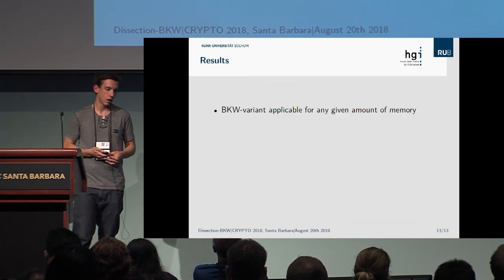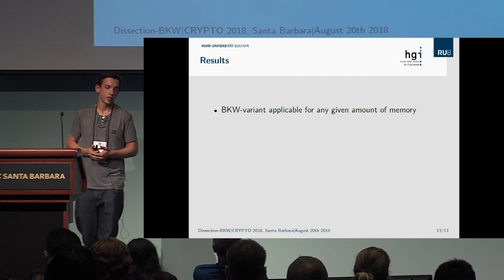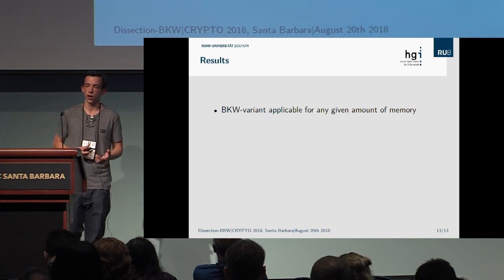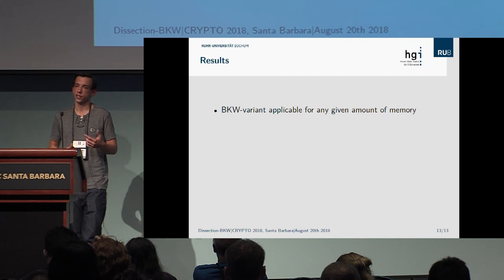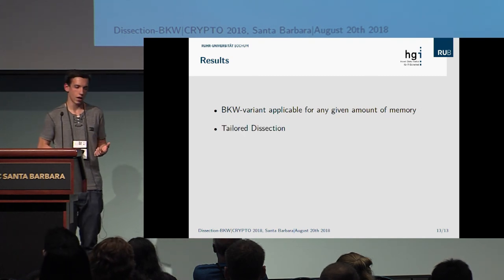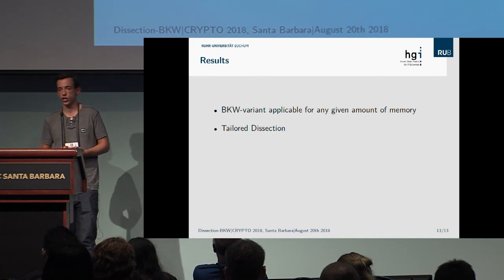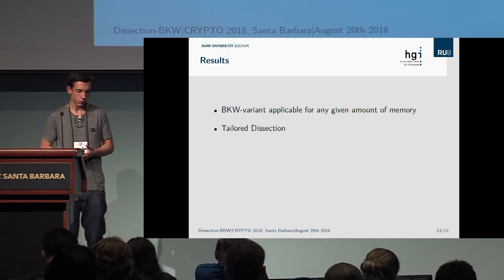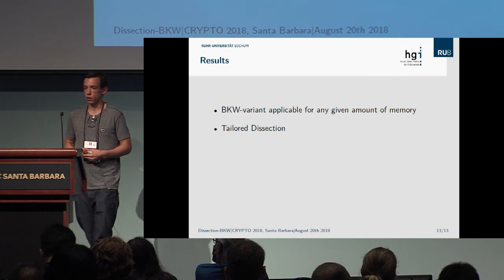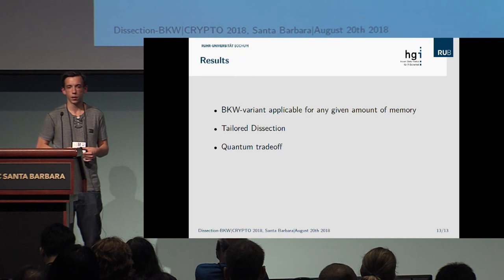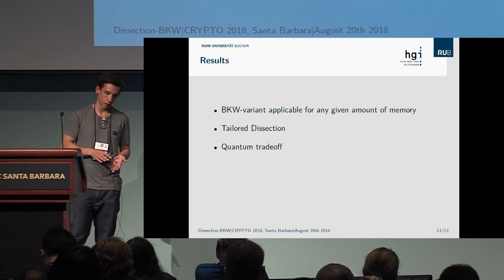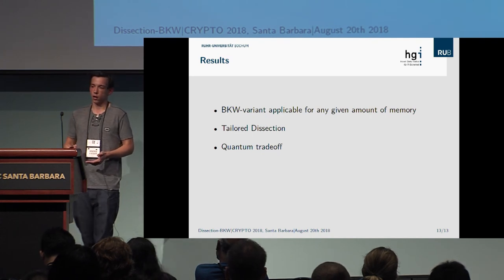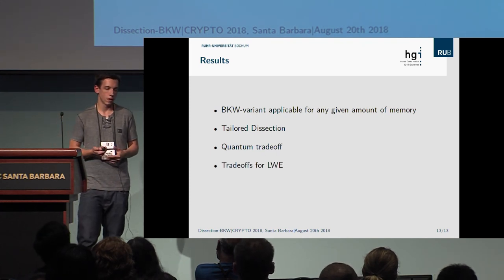In summary, we give the first BKW variant applicable for any given amount of memory, achieved by abstracting the LPN problem via BKW to solving the C-SUM problem. We give a generalization of the dissection technique, which is a time-memory trade-off for solving the C-SUM problem via dissection algorithms. Additionally, not addressed in this talk but addressed in our paper, we give the first quantum version of the BKW algorithm, which forms the best trade-off so far. Our results are also easily applicable to the LWE setting. Thank you very much.